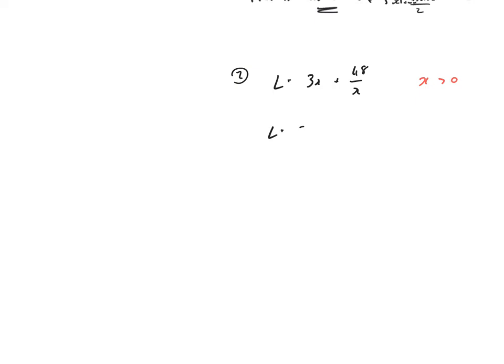First move is to prepare to differentiate. 3x is ready to go, but the 48 over x needs to become 48x to the minus 1. I can now differentiate, and that will be 3 minus 48x to the minus 2, make that equal to 0, and make my statement. For stationary points, L dashed equal to 0.